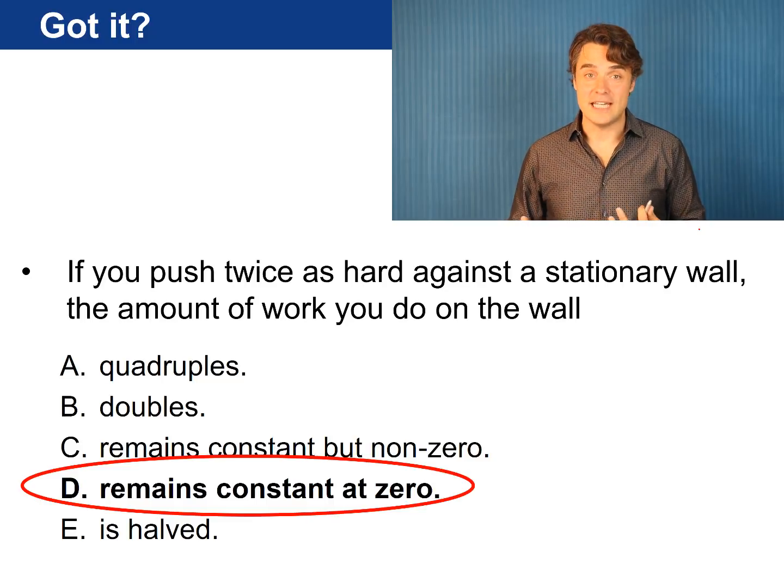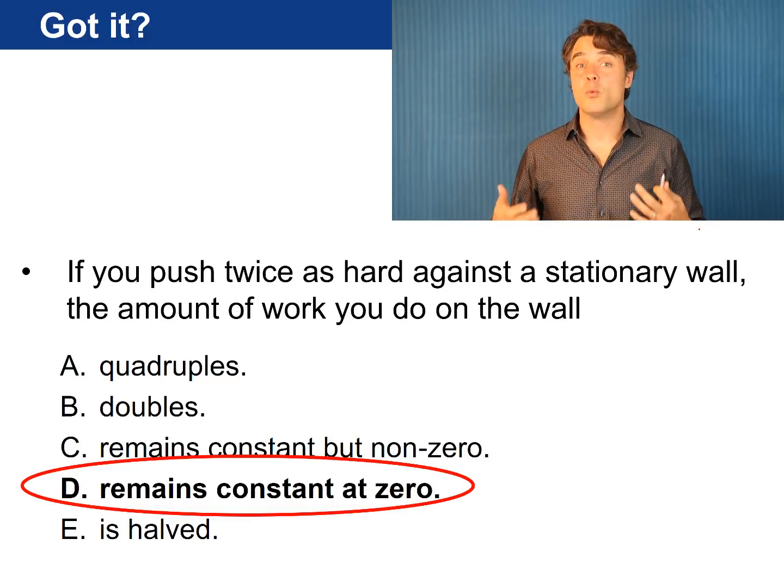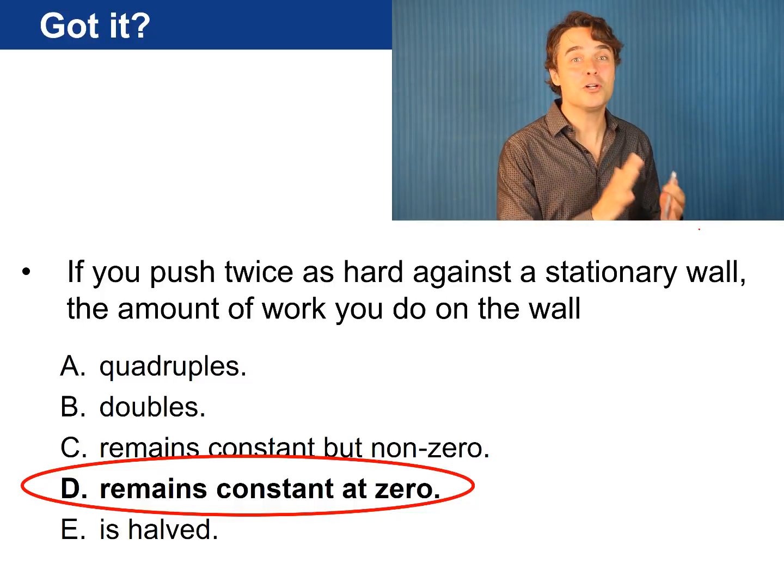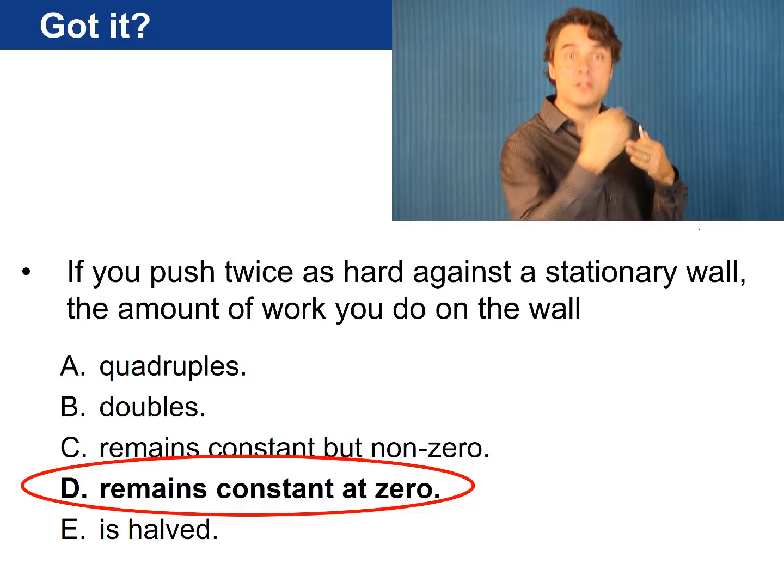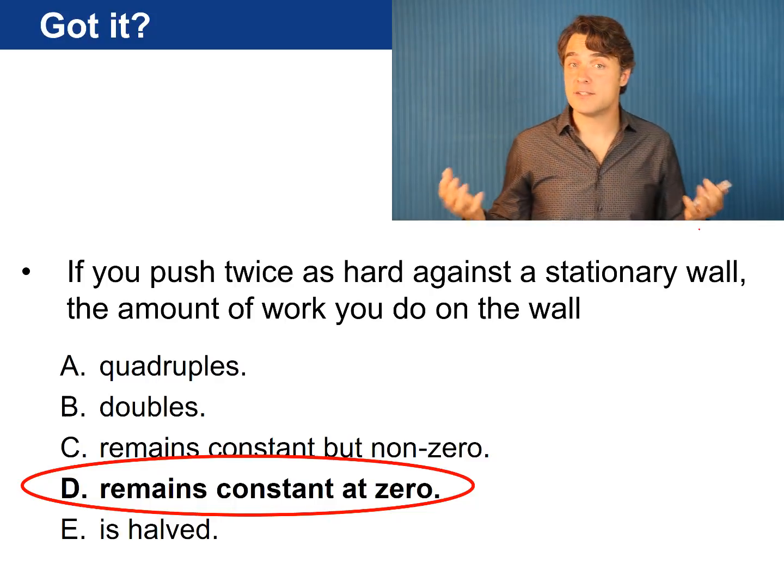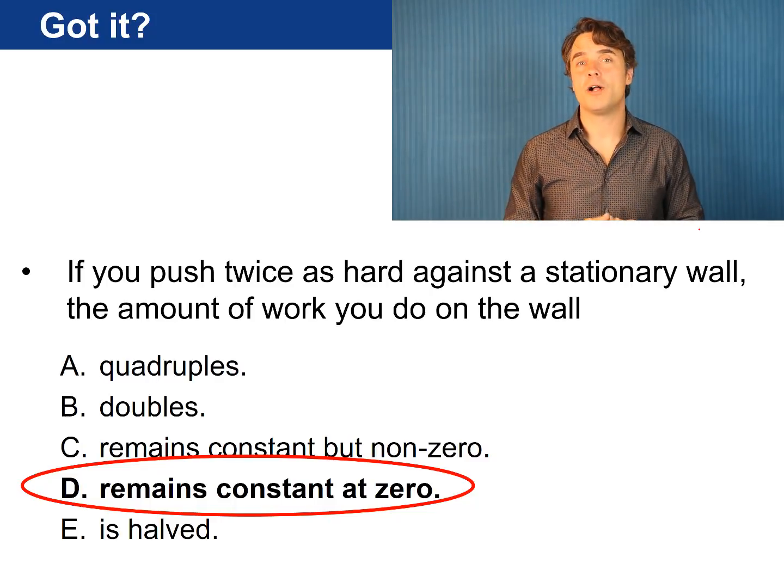The correct answer is D. It turns out that when computing work it doesn't matter how hard you push against something if that thing is not moving. If there is no distance then delta x is zero and the work you do on the wall is zero.